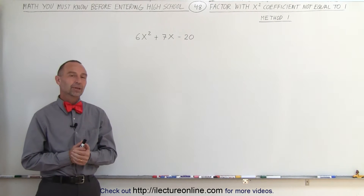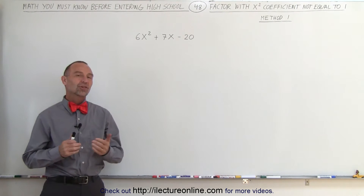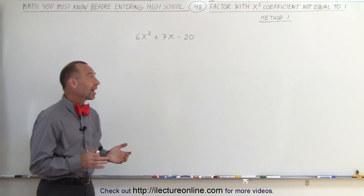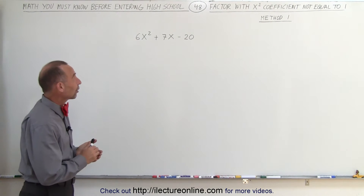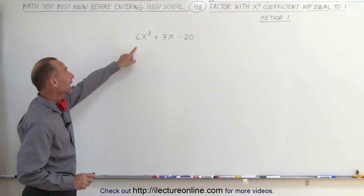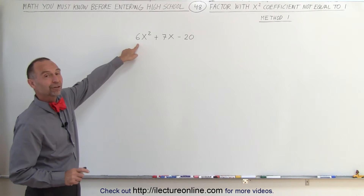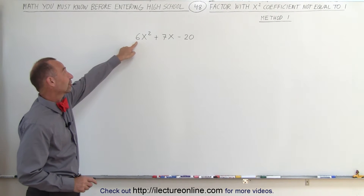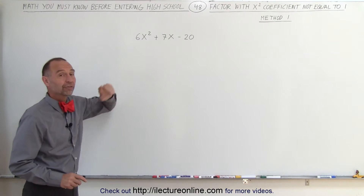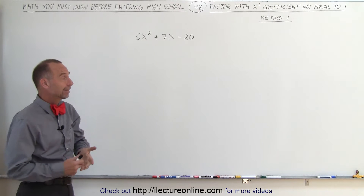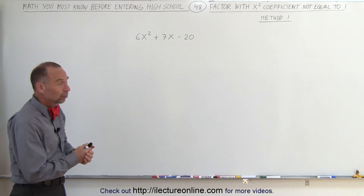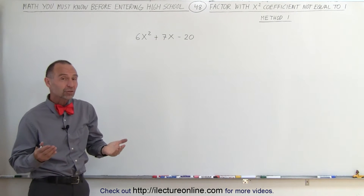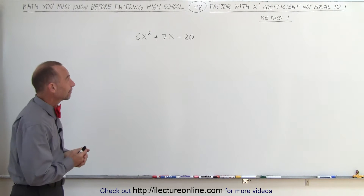Welcome to ElectronLine. The more challenging factoring problems are the ones that don't have a 1 in front of the x-squared term. In this case, the coefficient in front of x-squared is 6. So how do you factor something like that?